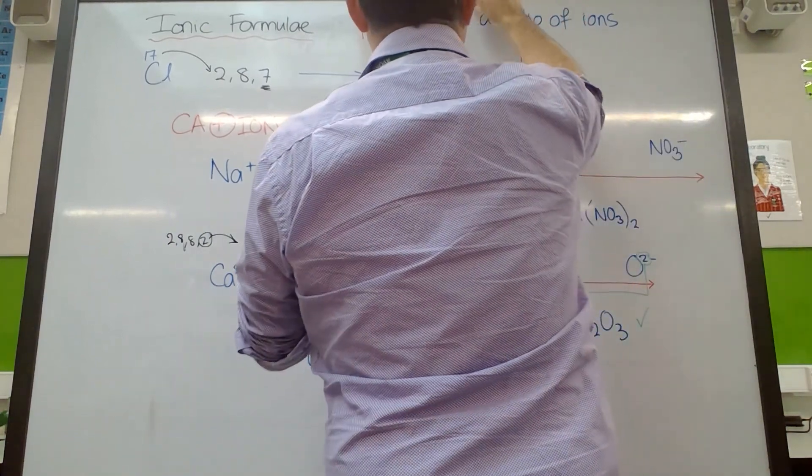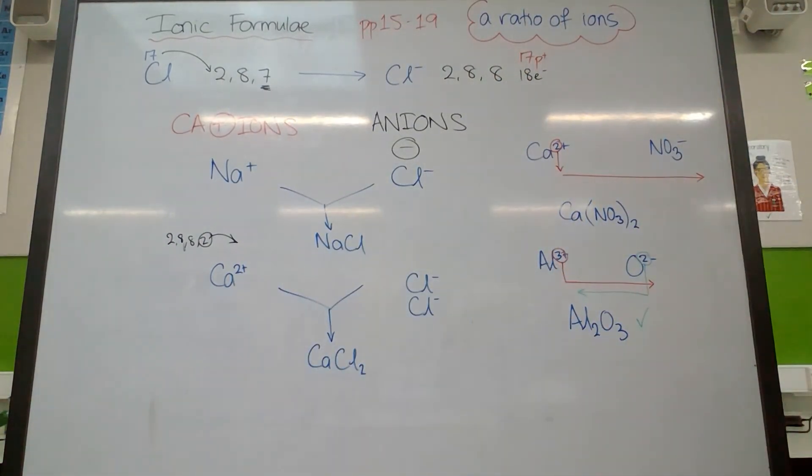The key statement is that an ionic formula is a ratio of ions. And again, remembering that charges have to cancel out or add up to zero.